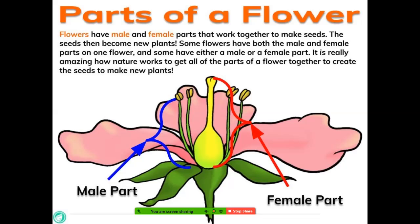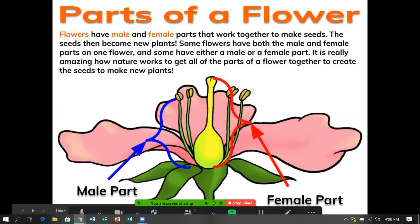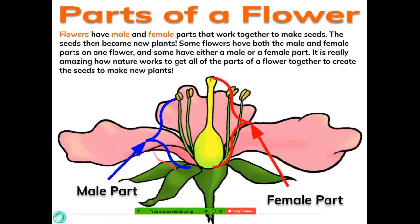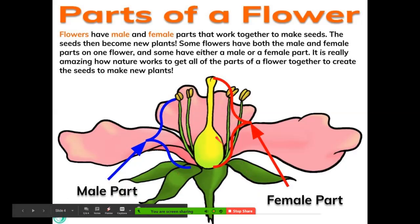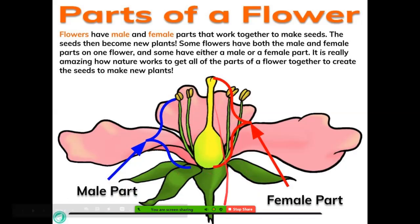As you can see, the blue is pointing to these long, skinny, green pieces with the little yellow piece on top — that is the male part. Then the female part is this one in the center, the big yellow one. It starts at the bottom as big and it's small at the top.